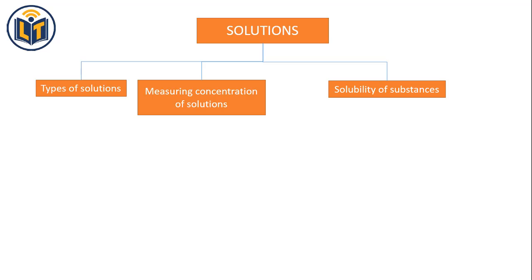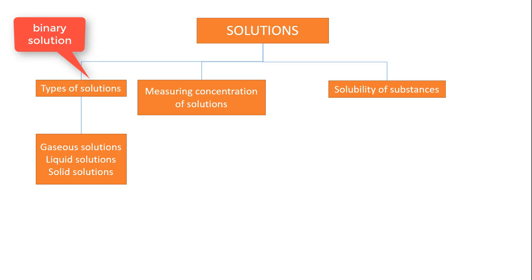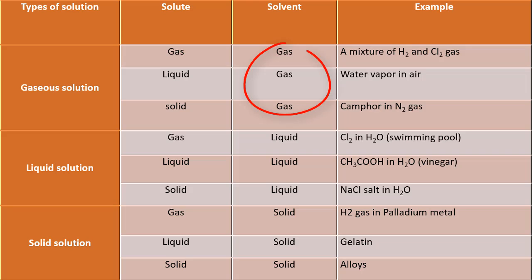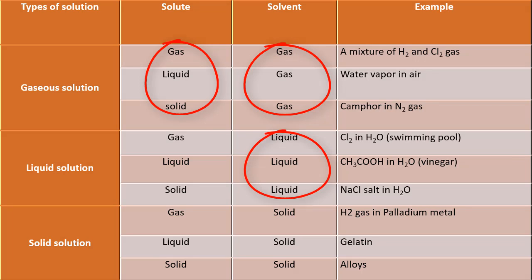First is types of solutions. In case of binary solutions, solutions have been categorized into three types: gaseous solution, liquid solution, and solid solution. In gaseous solutions, solvent is always gas and solute can be either solid, liquid or gas. In liquid solutions, solvent is always liquid and solute can be either solid, liquid or gas. In solid solutions, solvent is always solid and solute can be either solid, liquid or gas.